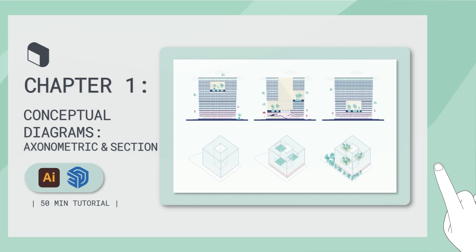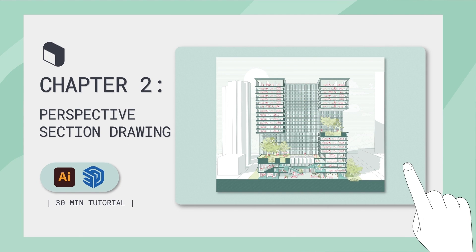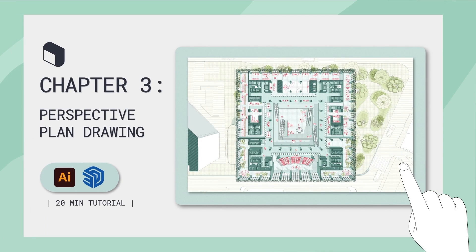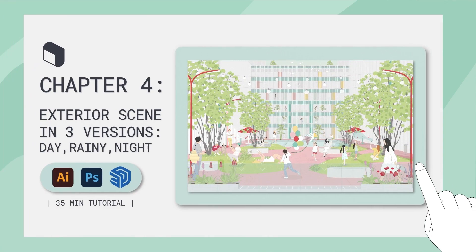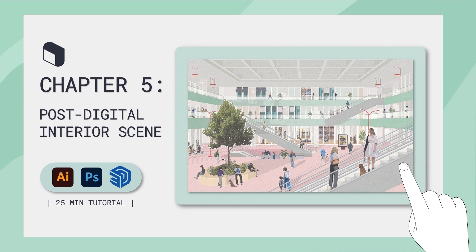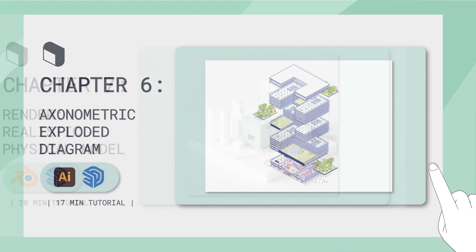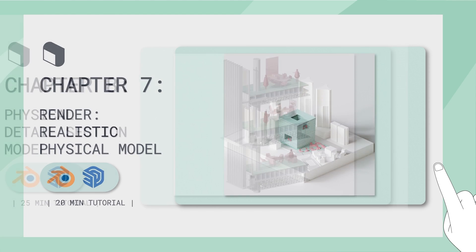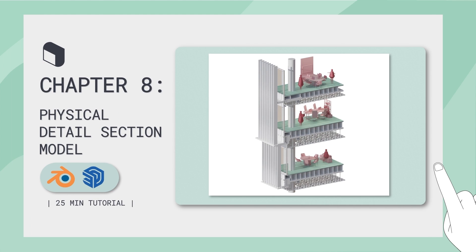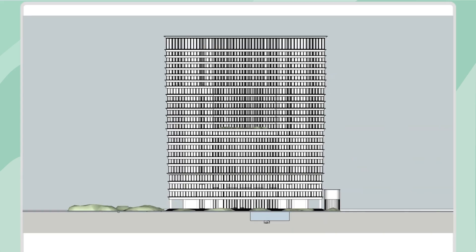Each chapter in this class focuses on a different form of architectural representation. You'll learn a wide range of visualization methods, from mastering essential commands to creating architectural diagrams, sections, interior and exterior scenes, and detailed 3D models. With this comprehensive series, we aim to cover all the must-know aspects of architectural representation.